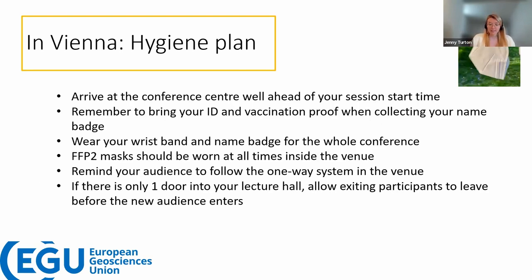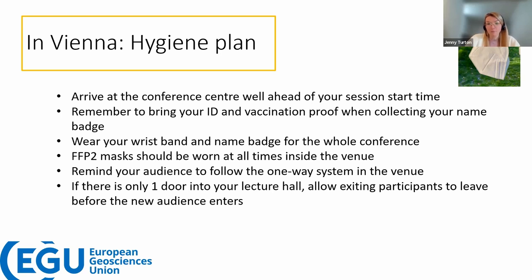Because of the situation, there is a slightly different registration procedure. We recommend that conveners arrive at the conference centre well ahead of their session start time to pick up registration documents. Please bring your ID and vaccination proof when collecting your name badge. You will be given a wristband, and this wristband and your name badge need to be worn for the whole conference, so you won't need to show your documents again. FFP2 masks should be worn when inside the venue. There will be a one-way system in most of the larger lecture halls, and conveners should remind audiences of this.